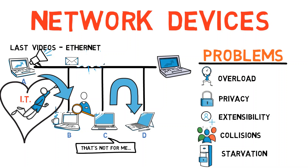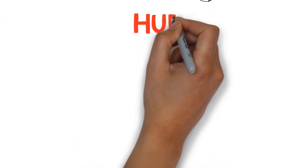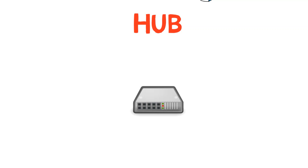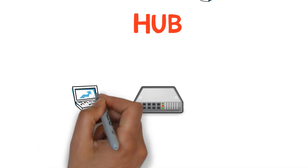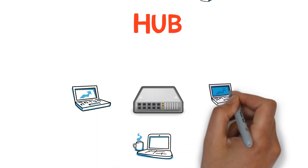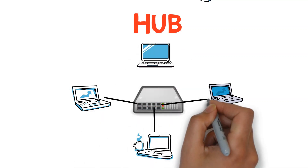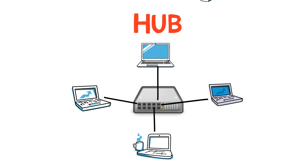This doesn't seem like the best network. We shall now get to know network devices that help deal with these issues. One device that solves only the extensibility issue is called a hub. A hub is a device with multiple ports that single Ethernet cables are connected to. So instead of having one cable with many computers attached to it, we have instead a single hub and each computer is connected to it via a single cable. This makes the IT guy's life much easier. The hub simply takes the pulse it receives and multiplies it — sends it to all other ports.